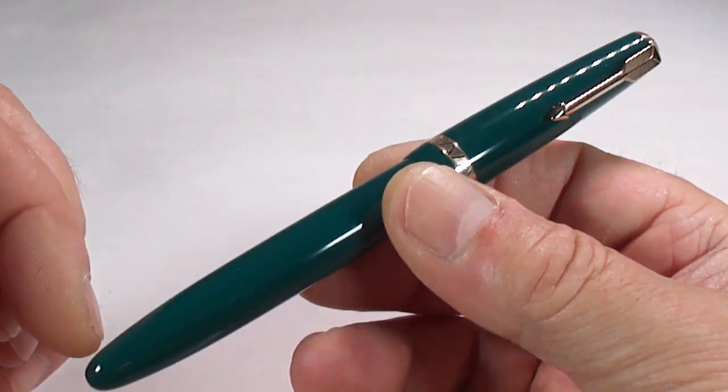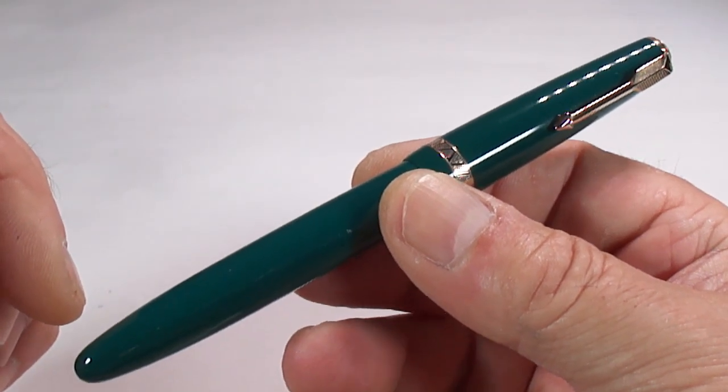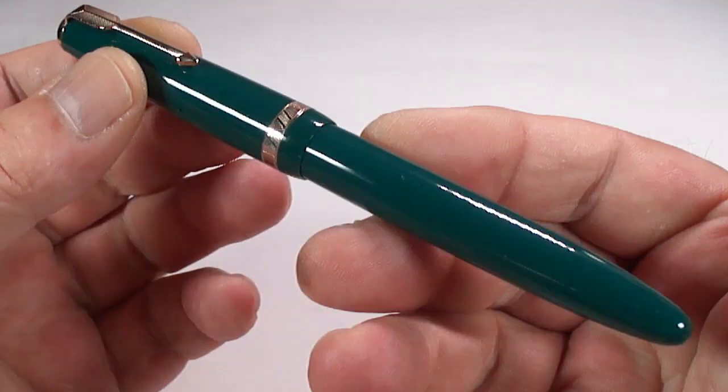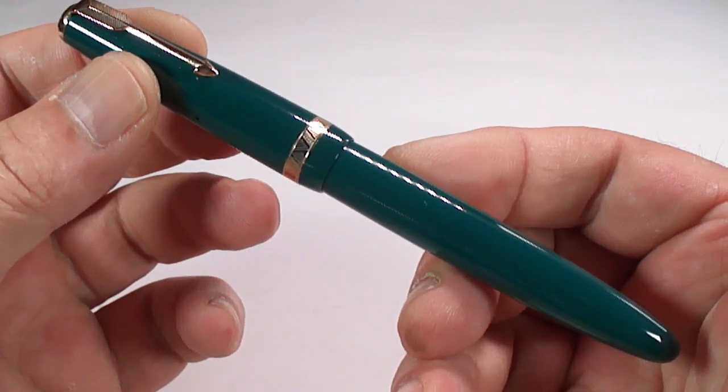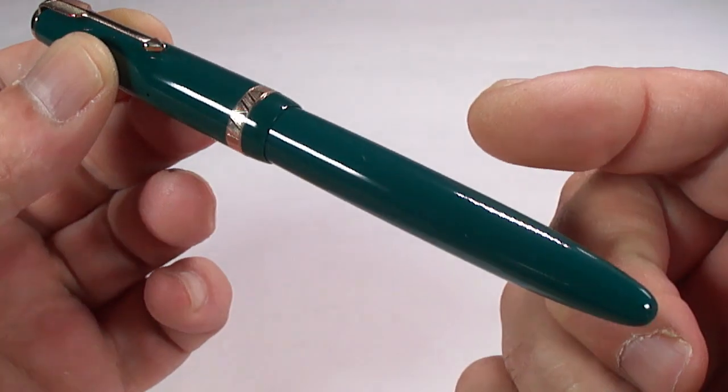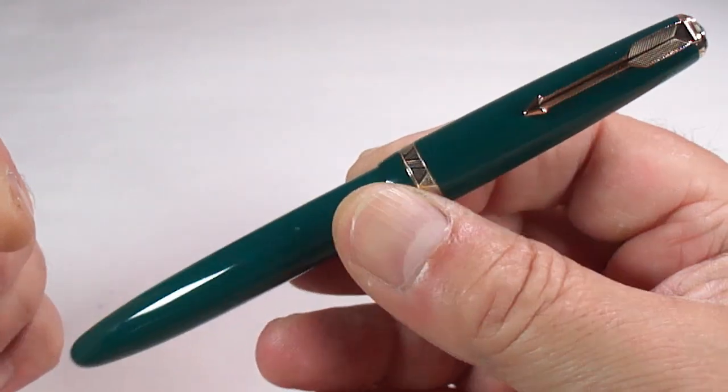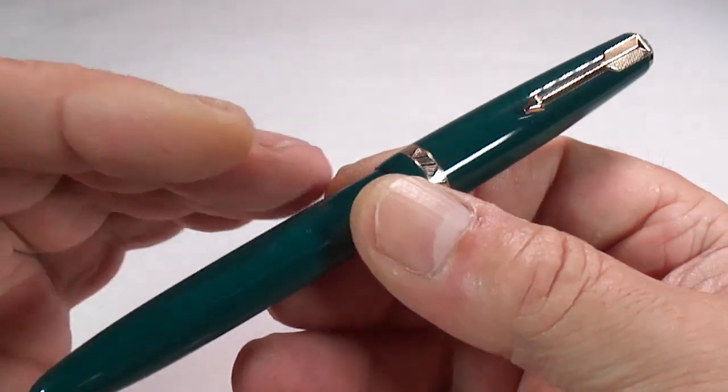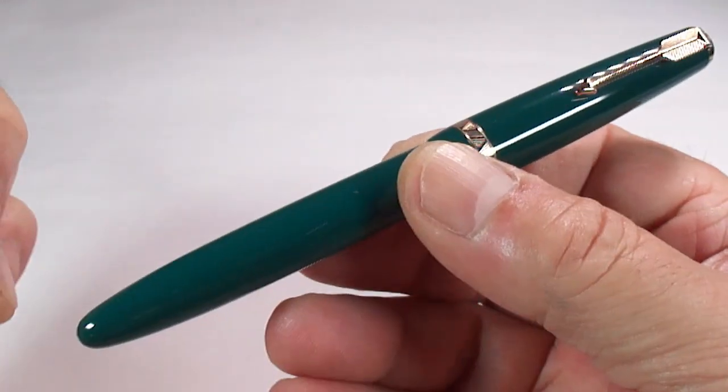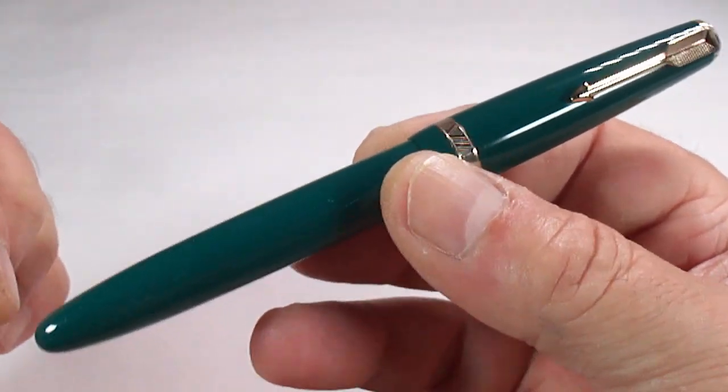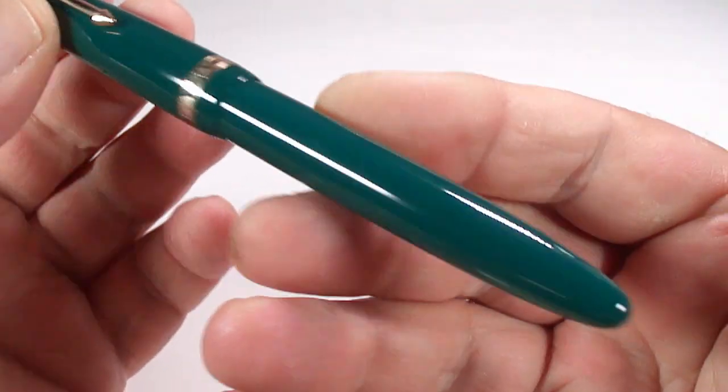Around 1958 they discontinued the Senior model and then introduced the Parker Maxima fountain pen. As I said, this one I can date to 1955. The Senior model was actually the flagship pen of that particular range of that particular period. It's a lovely size pen and a lovely large pen as well.